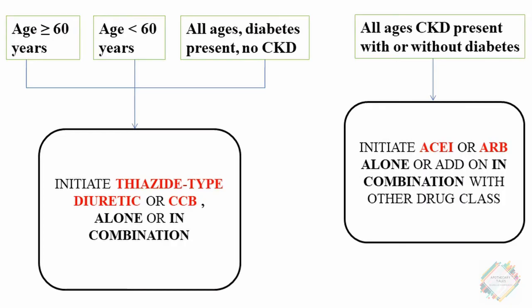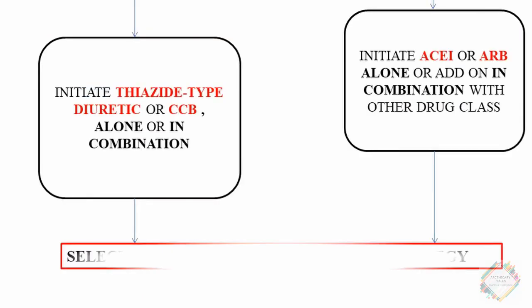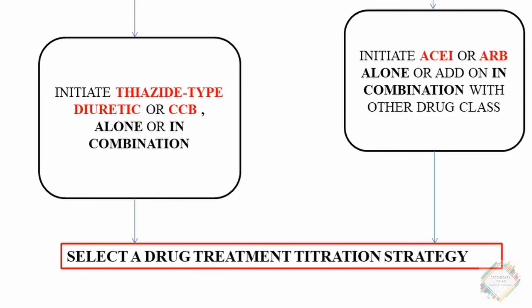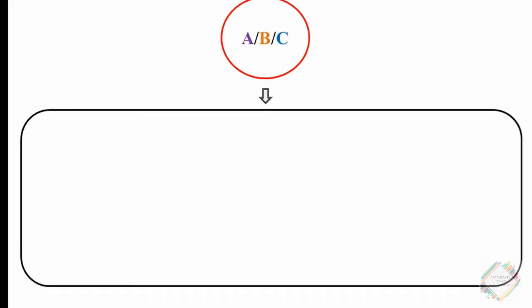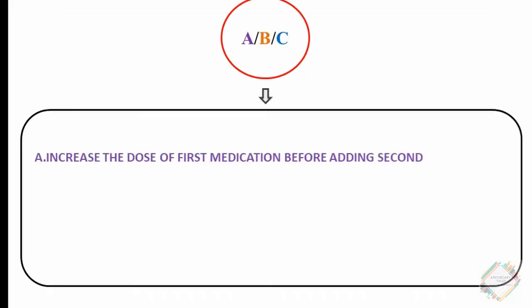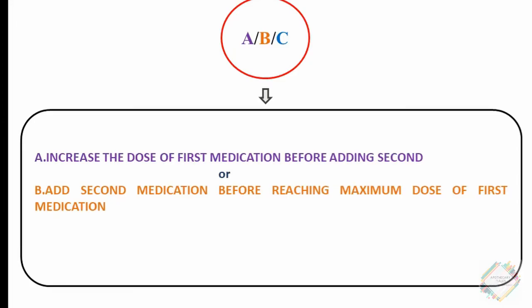Once we have initiated the first-line therapy, we select a drug treatment titration strategy: A, B, or C. Strategy A is to increase the dose of the first medication before adding a second. Strategy B is to add a second medication before reaching the maximum dose of the first. Strategy C is to start with two medication classes separately.